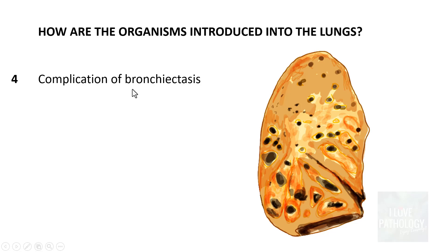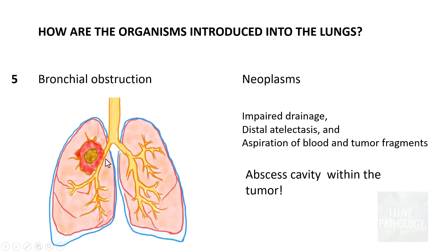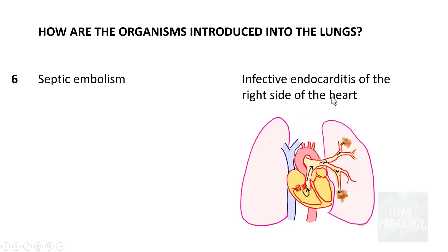It can also occur as a complication of bronchiectasis — which is dilatation of bronchi and bronchioles. Bronchial obstruction can lead to lung abscess, most often in patients with neoplasms, because neoplasms can impair drainage and cause atelectasis of distal airways, aspiration of blood and tumor fragments. Additionally, septic embolism from infective endocarditis, particularly on the right side of the heart, can reach the lung parenchyma through the pulmonary blood vessels and cause suppurative inflammation and lung abscess.